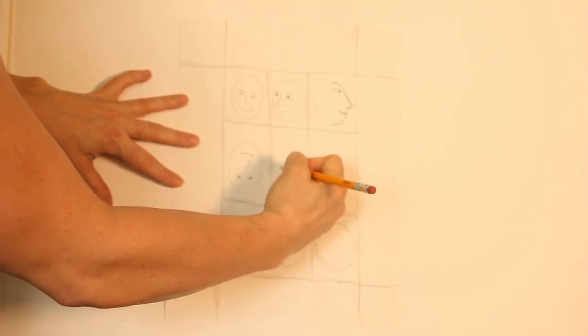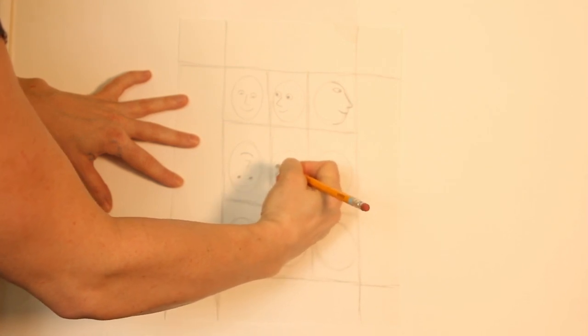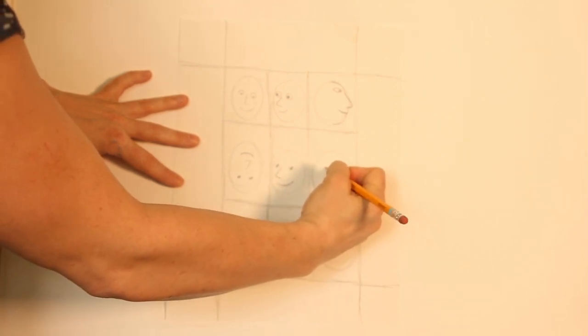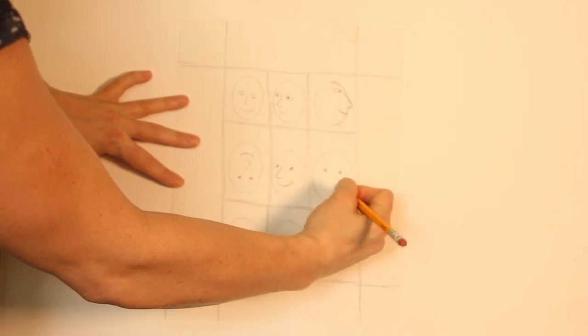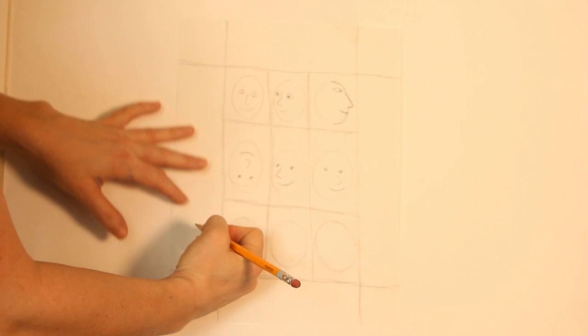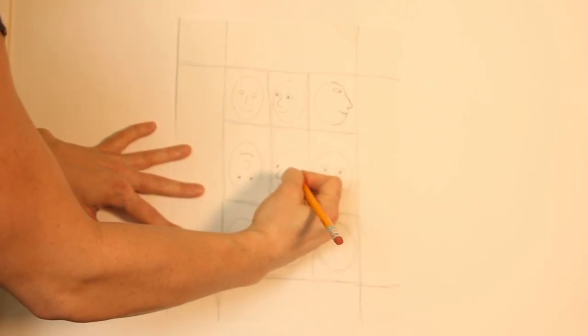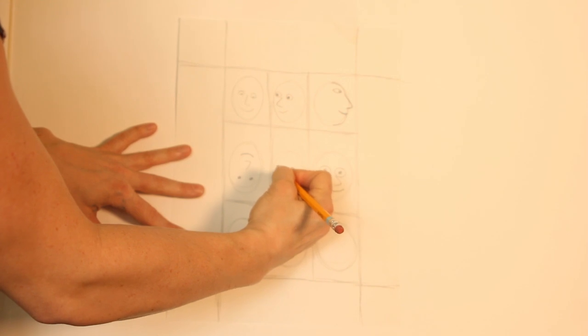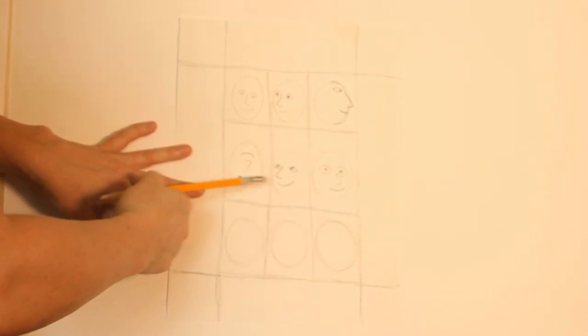So we're going to make all the faces now in each section, and they're all facing different directions. And you could put a circle around the eyes, you could put a football shape around the eyes, or you could just leave the eyes as little spots. That's okay too.